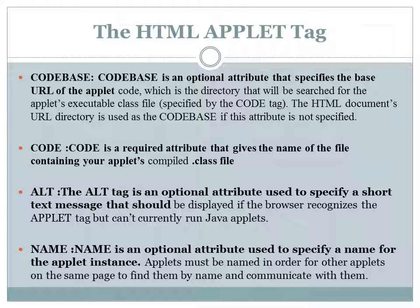The next attribute is code, which is a required attribute. Code specifies the name of the compiled .class file. Next is alt, an optional attribute that specifies a short text message that should be displayed if the browser has issues running the Java applet.